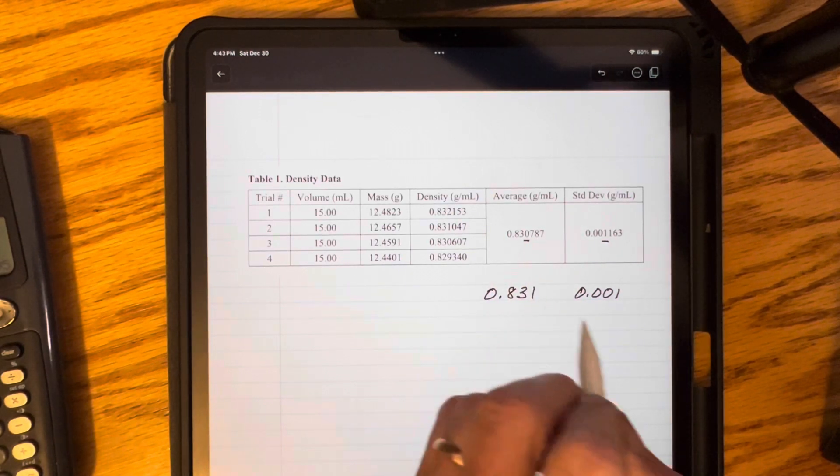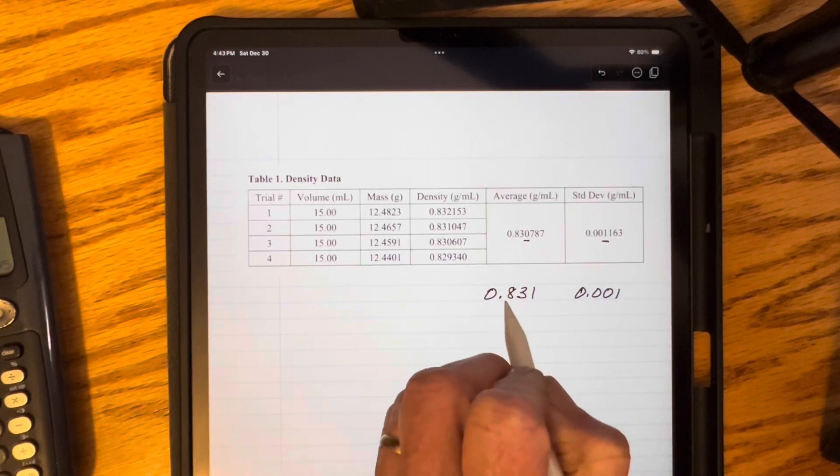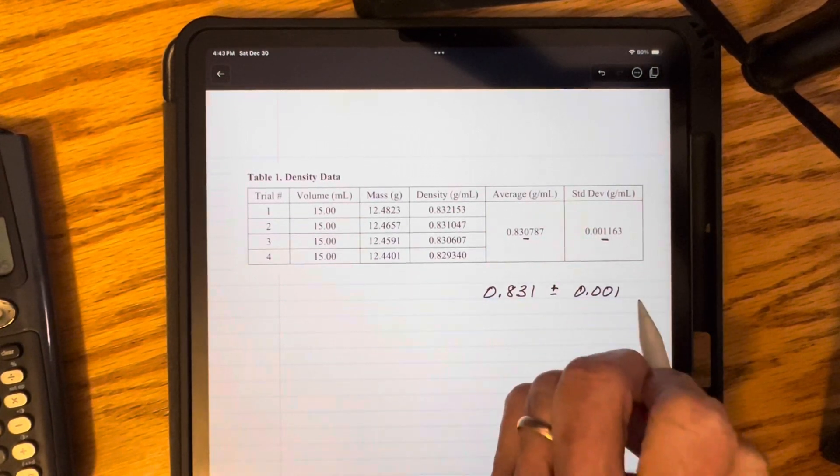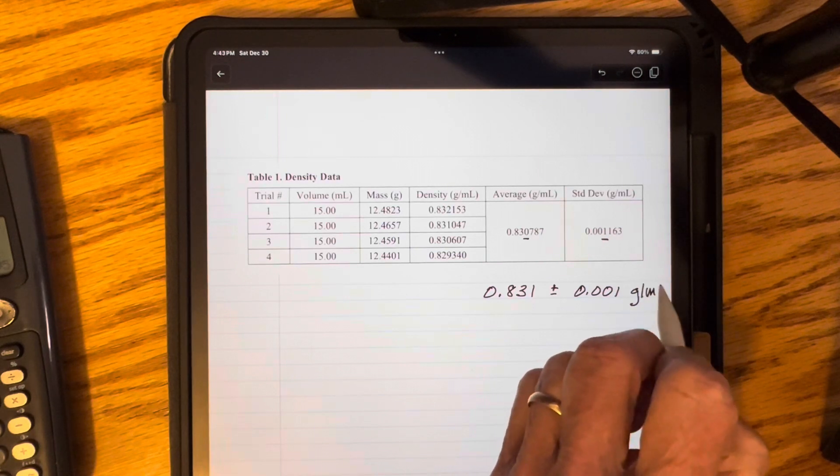And because the next digit is a 7, I'm going to round that 0 up to a 1 and report my answer as 0.831 plus or minus 0.001 grams per milliliter.